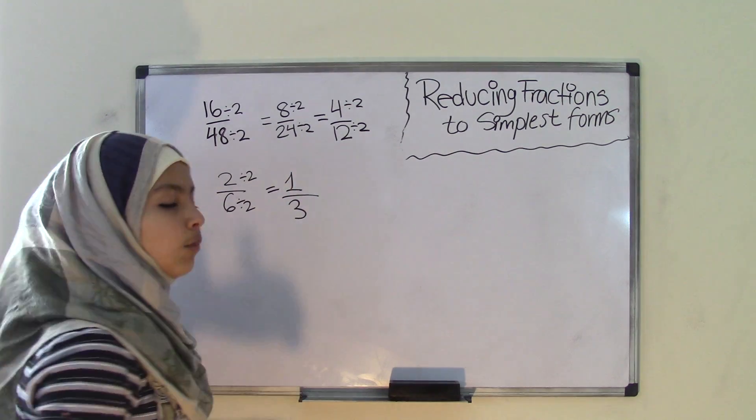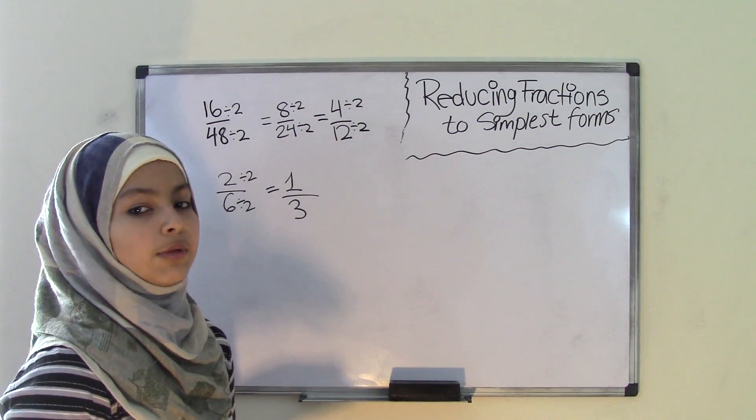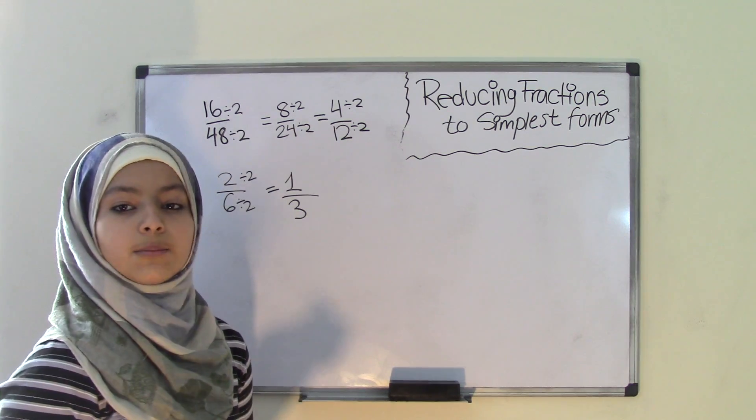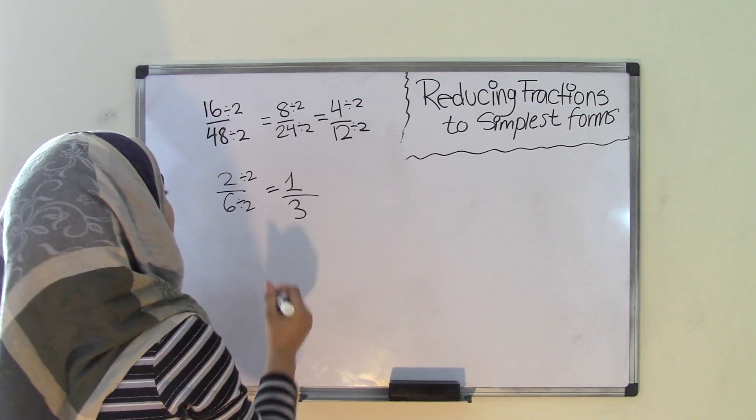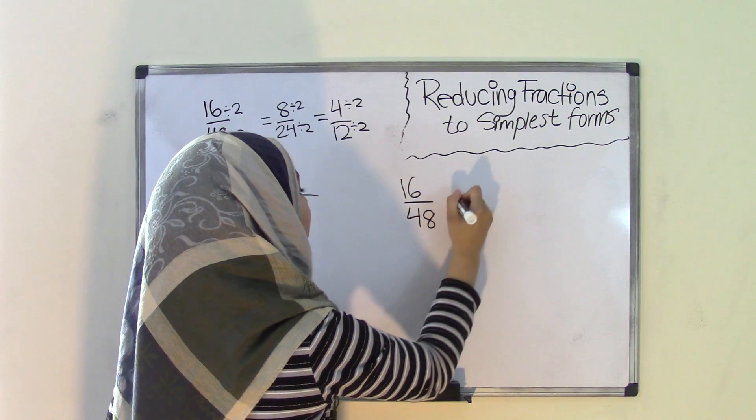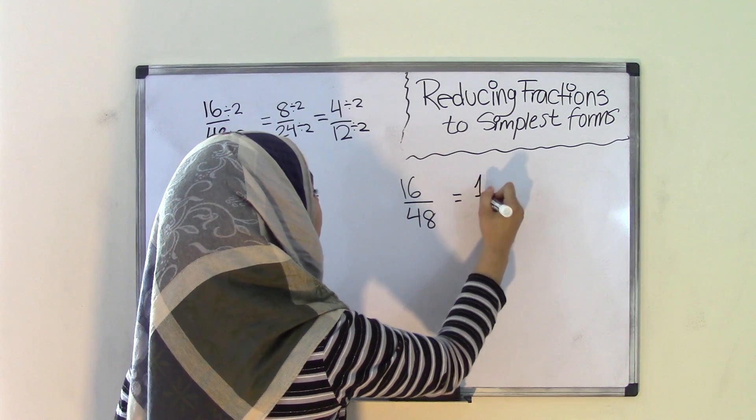Now we get 1 over 3 and 1 over 3 is the simplest form that we can get because there is no other number that both 1 and 3 are divisible by. That means the fraction 16 over 48 simplified equals 1 over 3.